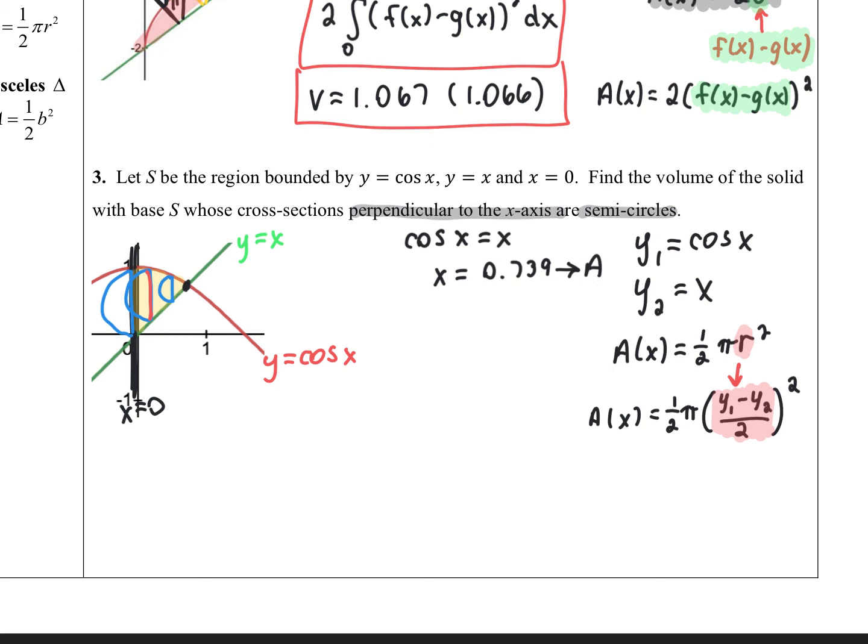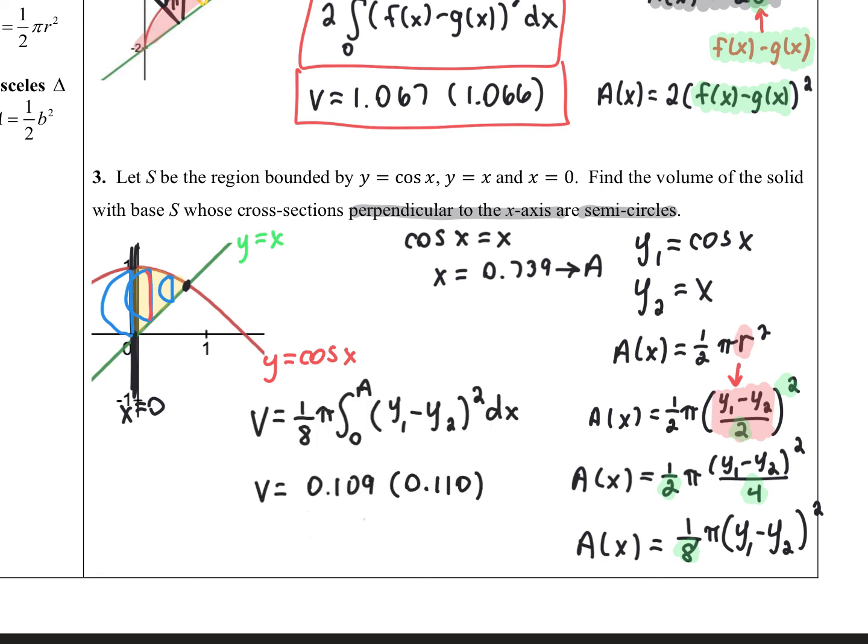I'm going to go ahead and simplify this a little bit. If I square a fraction, I'm going to square the numerator and the denominator separately. So here my 2 squared became the 4, and then the 4 times the 2 became the 8th. So my area formula that I'm going to integrate is 1 eighth pi, and then in parentheses, upper minus lower, y1 minus y2, that quantity being squared. Putting all that together in my integral gives me this 1 eighth pi, so I went ahead and pulled it out in front of the integral. My limits of my region go from a low x of 0 to a high x of 0.739, which I have stored as a. And then I just have my upper minus lower, that quantity being squared, and putting that into my calculator gives me an answer of 0.109 or 0.110.